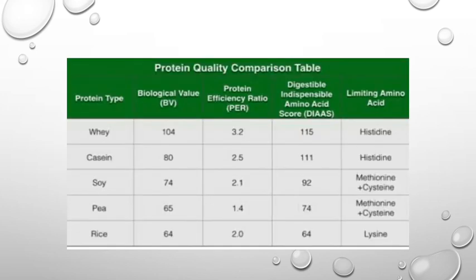A comparison table for protein quality across different food items: whey has a biological value of 104, protein efficiency ratio of 3.2, and limiting amino acid is methionine. Casein milk has a biological value of 77, PER around 2.5, limiting amino acid is methionine. For rice, biological value is 64, protein efficiency ratio is low, and the limiting amino acid is glycine.